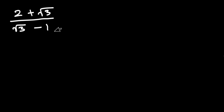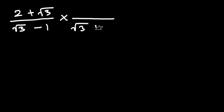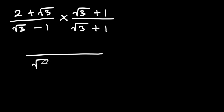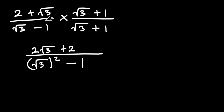In our next example, go ahead and pause the video and give it a try first. The first thing I'm going to do is get rid of the square root in the denominator by using difference of two squares. I do this by multiplying by square root of 3 plus 1 over square root of 3 plus 1. On the denominator we get square root of 3 all squared minus 1. On the numerator: 2 times square root of 3 is 2 root 3, 2 times 1 is 2, square root of 3 times square root of 3 is 3, and square root of 3 times 1 is square root of 3.